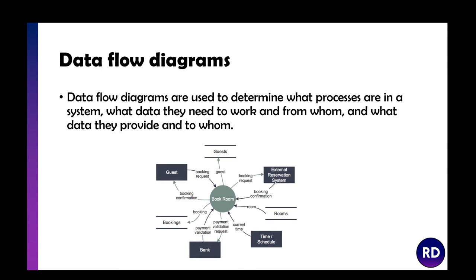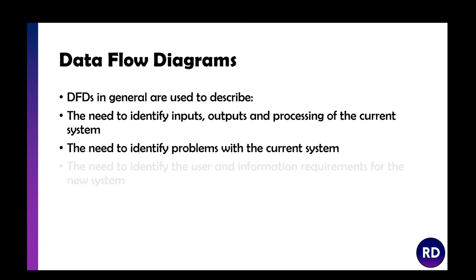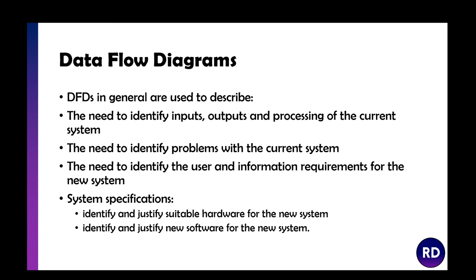Another tool we can use is a data flow diagram. This is used to determine what processes are in the system, what data they need to work from and from whom, and what data they provide and to whom. For example, to book a room: a guest needs to give a booking request and receive a booking confirmation. Data flow diagrams describe the inputs, outputs, and processing of the current system. They identify any problems, user and information requirements for the new system, and what hardware and software is needed. It might be a case of an entirely new system or database, but they might also need to buy better hardware to handle the traffic. So everything needs to be taken into account.